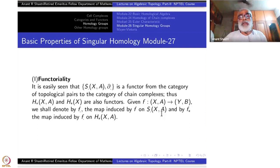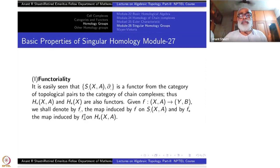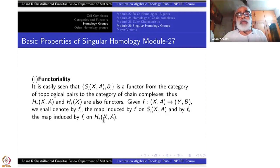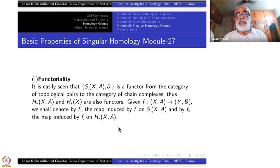Given a map f from (X,A) to (Y,B), we shall denote f-dot for the map induced at the chain complex level, and f-star for the map induced by f-dot at the homology level. Quite often f-star is used for both, which is somewhat confusing, so let us follow this convention: star for homology, dot for the chain complex level.